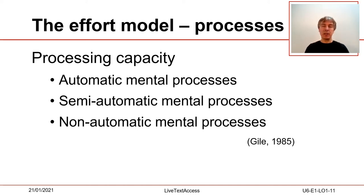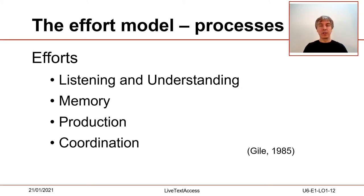Our brain has the capacity to process only one non-automatic process at a time. To understand this, it is important to know that mental activities can be of three types: automatic, like that at the basis of breathing; semi-automatic, like that at the basis of walking; and non-automatic, like actually listening, repeating, or reformulating what somebody has just said. The effort model is thought for simultaneous interpreting, but it can be easily adapted to real-time subtitling. Adapting Giles' notions to real-time subtitling, while typing we mainly do four non-automatic actions at the same time.